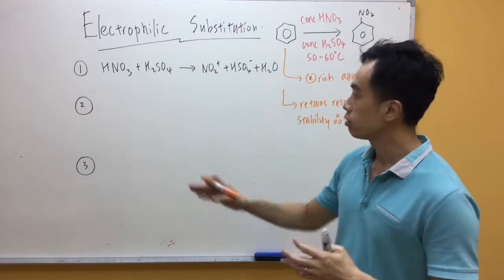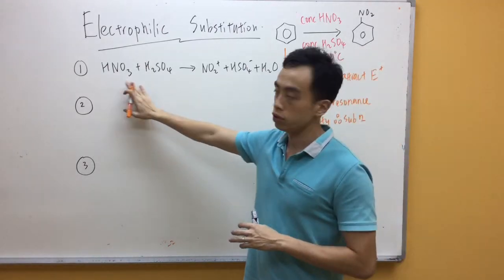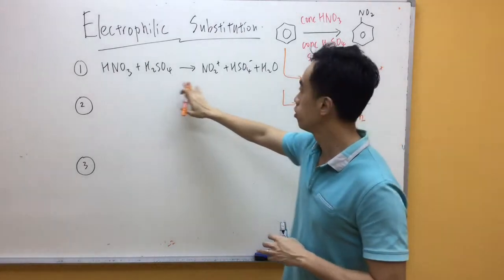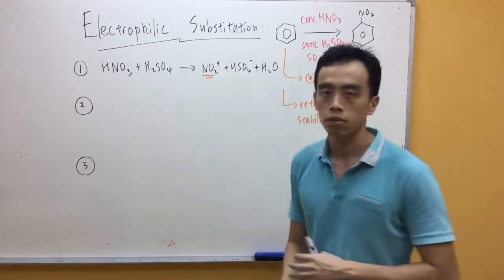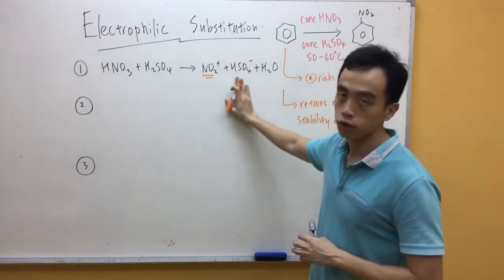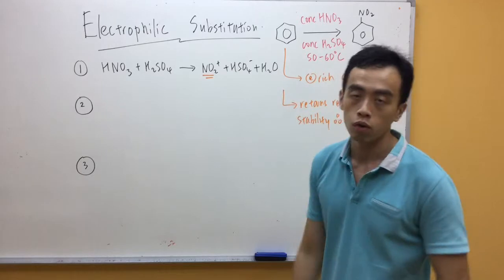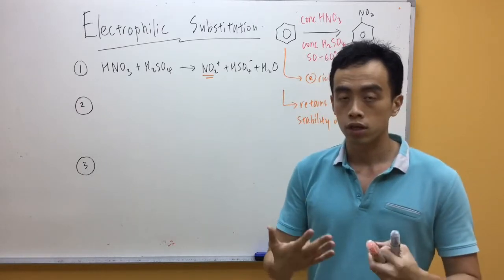So you notice the first reaction, which is to generate my electrophile, is just the reaction between concentrated HNO3, concentrated H2SO4, to generate my electrophile, my NO2+, with HSO4- and water. So therefore, the electrophile is generated.